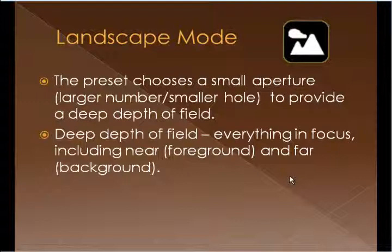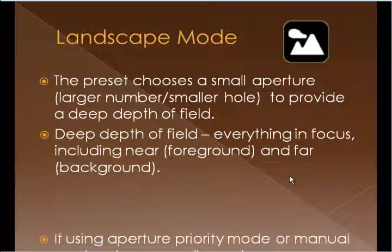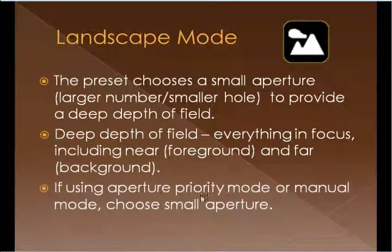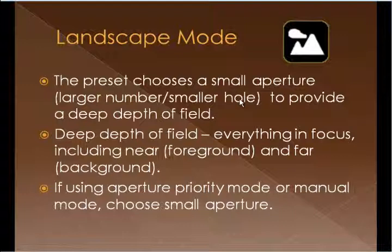A deep depth of field, if you remember from the previous lesson, is where everything is in focus — deep and far into the distance — including what is near in the foreground and what is far in the background. If using your aperture priority mode or the manual mode, choose a small aperture. Aperture can be interchanged for the word 'hole' — small hole, small aperture, think large number.